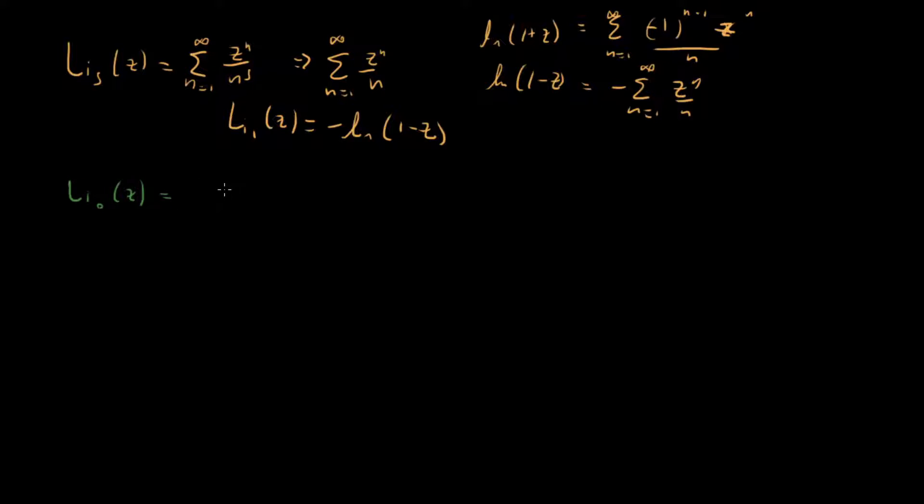Li sub 0 of z. What's this equal to? Well, 0, that means that this whole thing right here is just going to be, all these ends are going to just be set equal to 1. We're just going to have this series right here. Well, we know exactly what this is. This is a very famous series. This is the geometric series. This is going to be equal to z over 1 minus z.